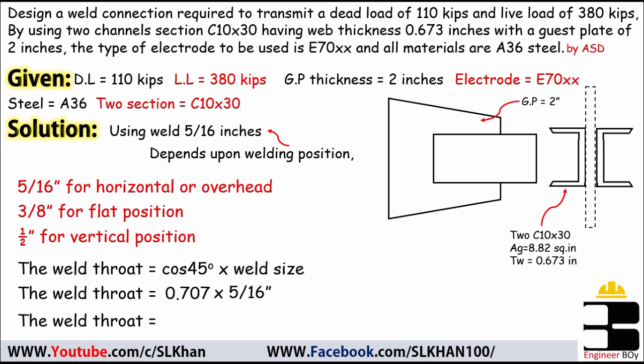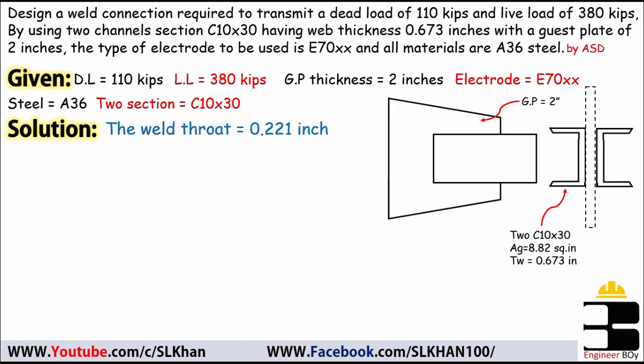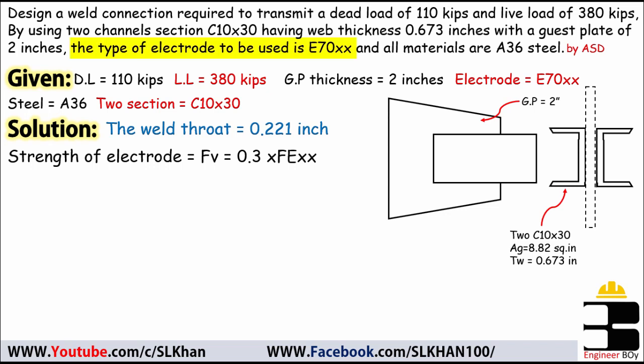Next, I'll calculate the strength or capacity of the electrode, which equals 0.3 times the electrode designation. Since the electrode is E70, the electrode strength = 0.3 × 70 = 21 ksi.